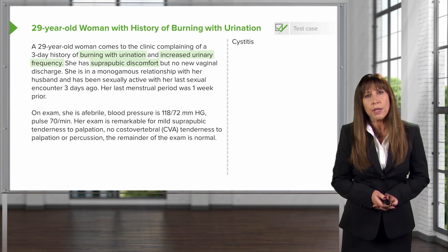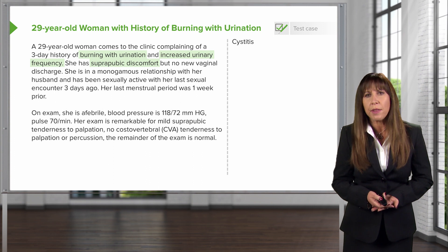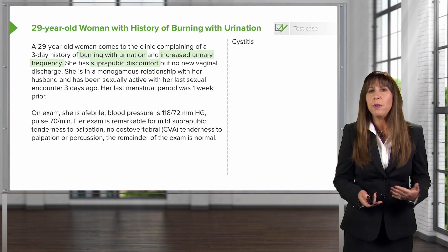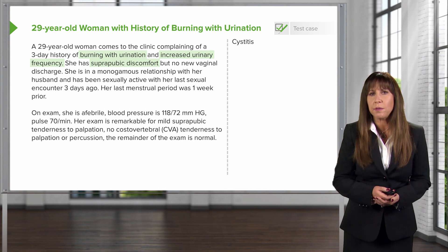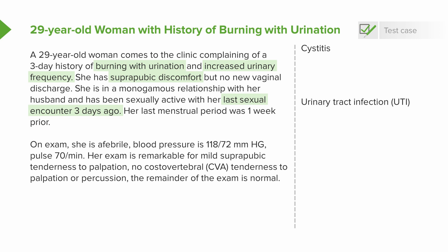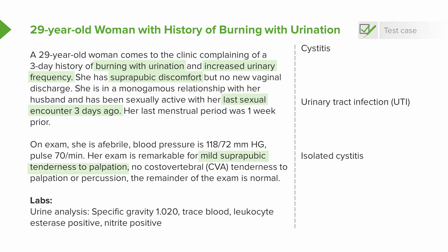What's important in looking at the history: she's complaining of dysuria — that's burning with urination — frequency, and urgency, along with suprapubic discomfort, very suggestive of cystitis. She also had sexual intercourse, which has been associated with UTIs in women. On exam, she has mild suprapubic tenderness without CVA tenderness, suggestive of an isolated cystitis. On urine analysis, leukocyte esterase indicates the presence of white cells, and nitrites indicate the presence of a gram-negative organism, such as E. coli.